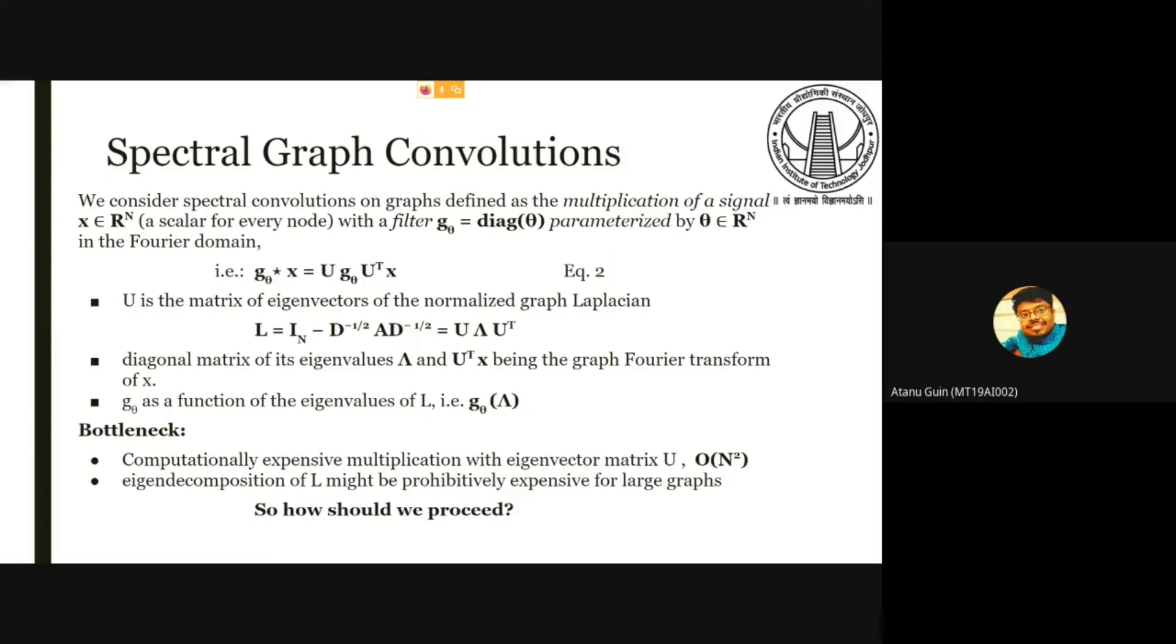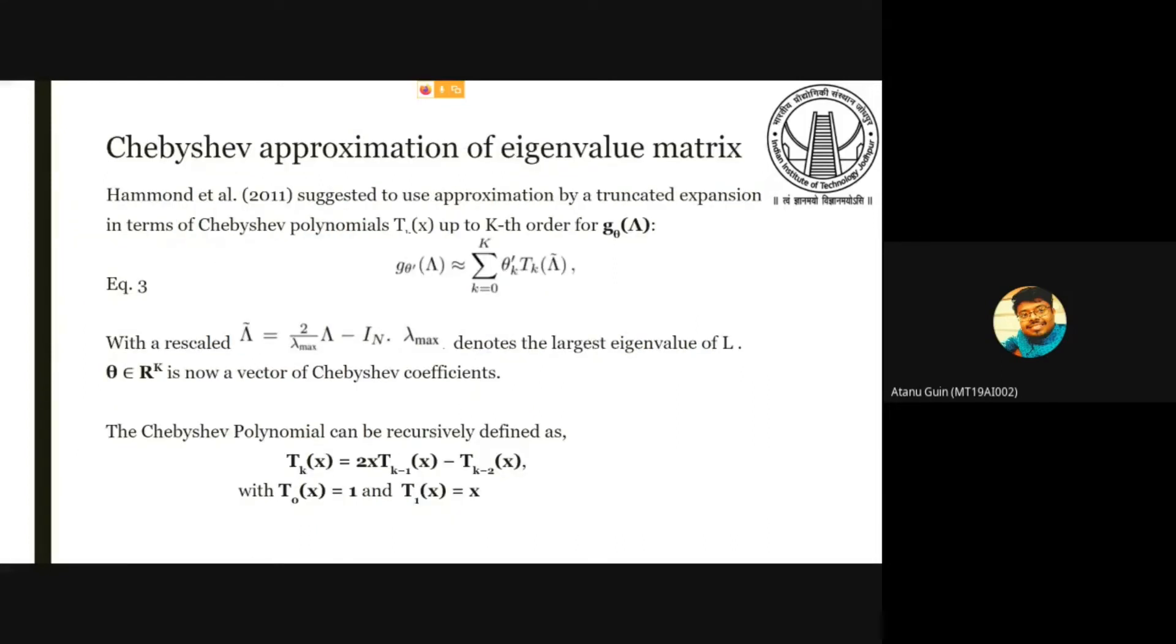Spectral graph convolution is when we multiply a signal with a filter. In Fourier domain, we get a result which can be expressed as a product of eigenvectors. Now this eigenvalue decomposition may be expensive for larger graphs. So we need to do some kind of approximation. Here we are using Chebyshev approximation for this task, which can be approximated for a kth order node.